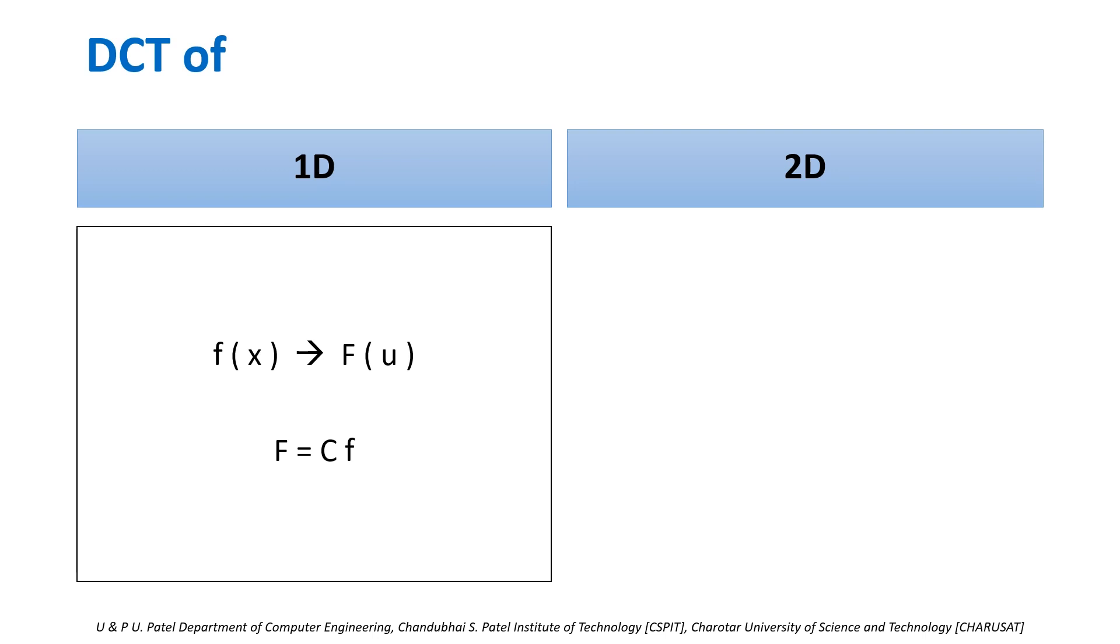F can be computed using matrix multiplication of C and f. On the other hand, if f is 2D function of x and y, its frequency domain representation will be F of u,v and can be computed using matrix multiplication of C, f, and C transpose.